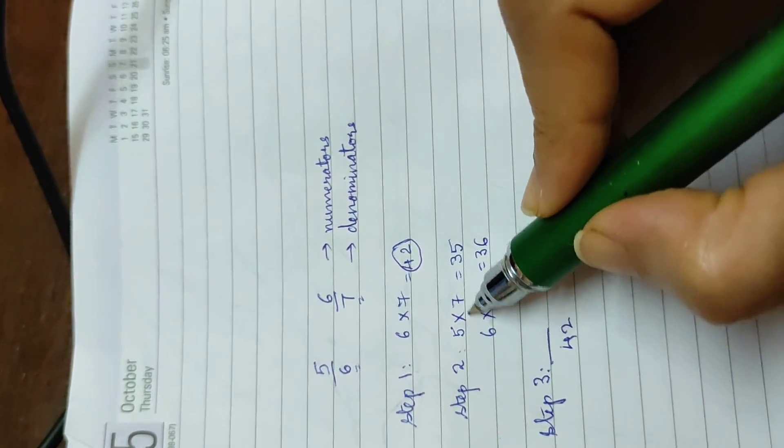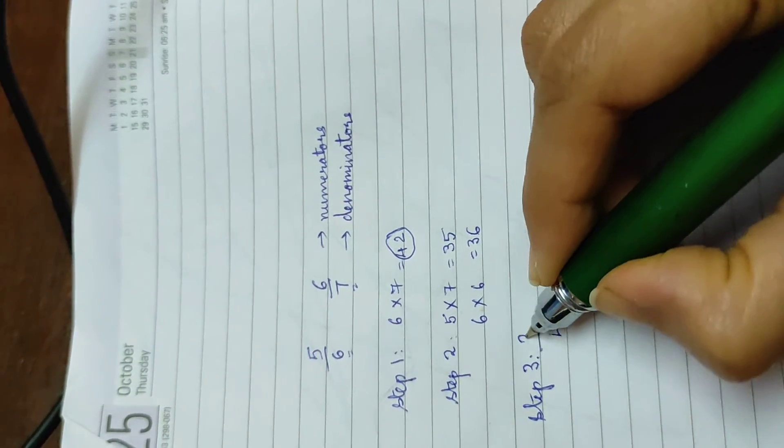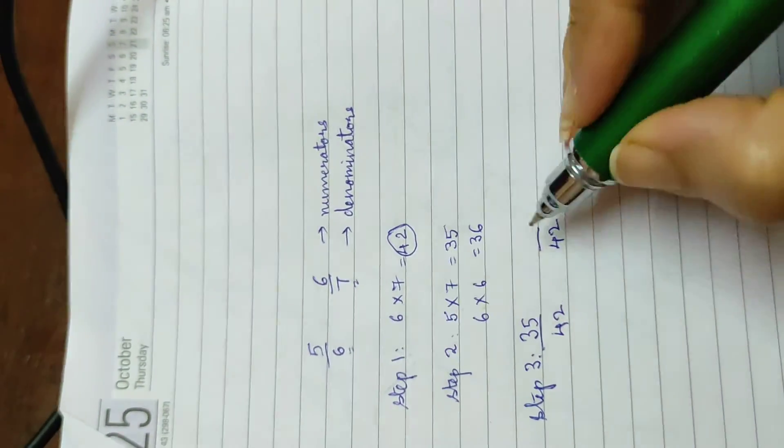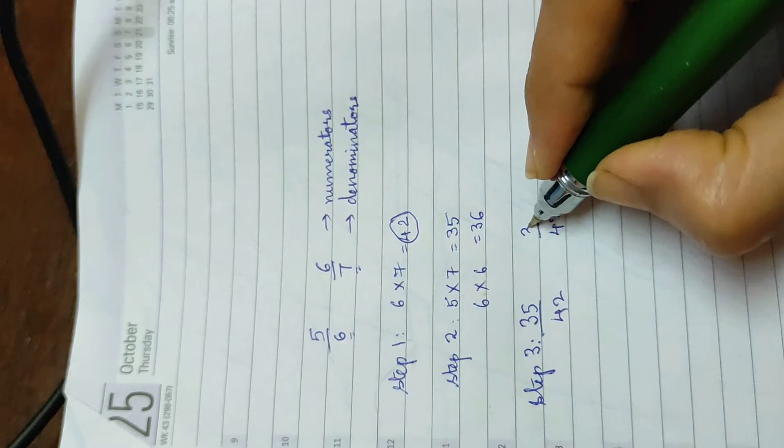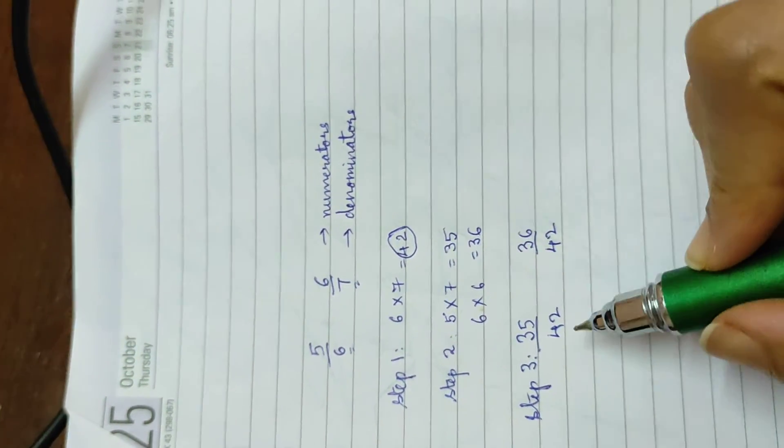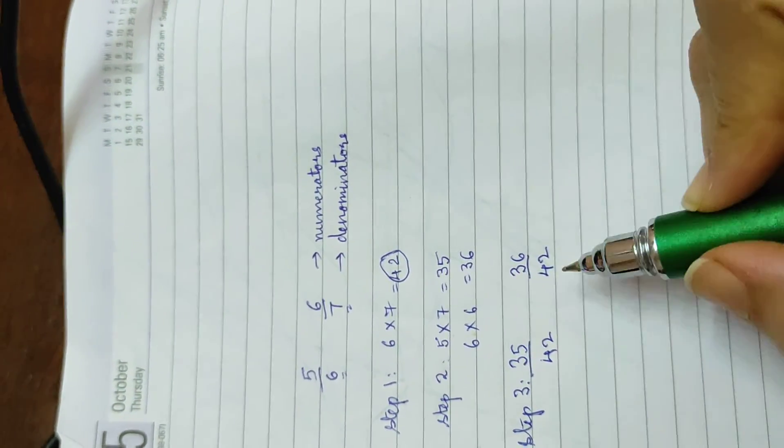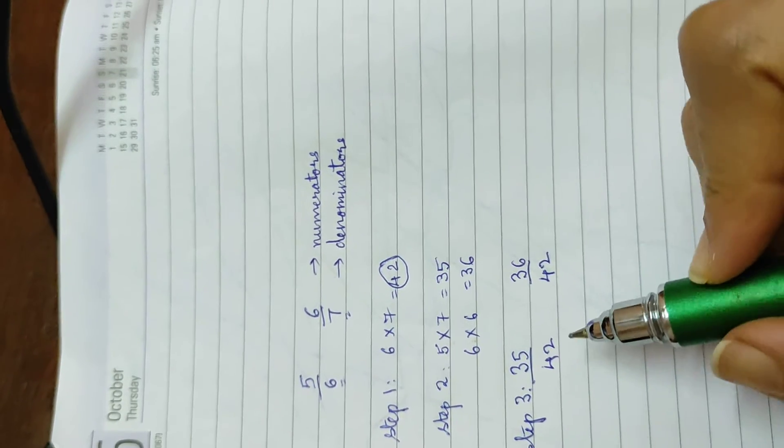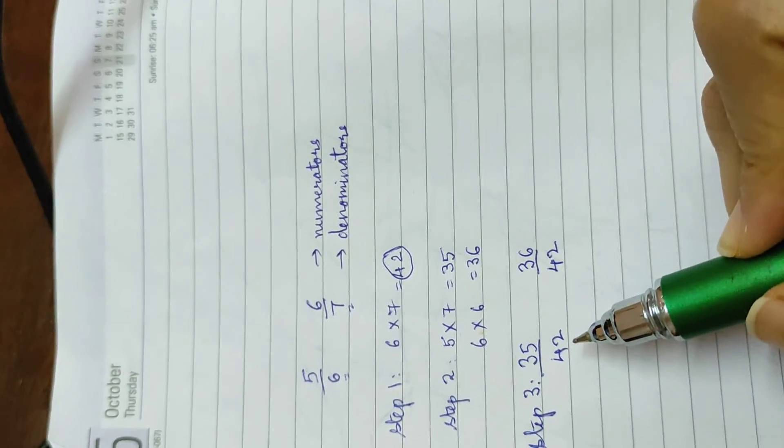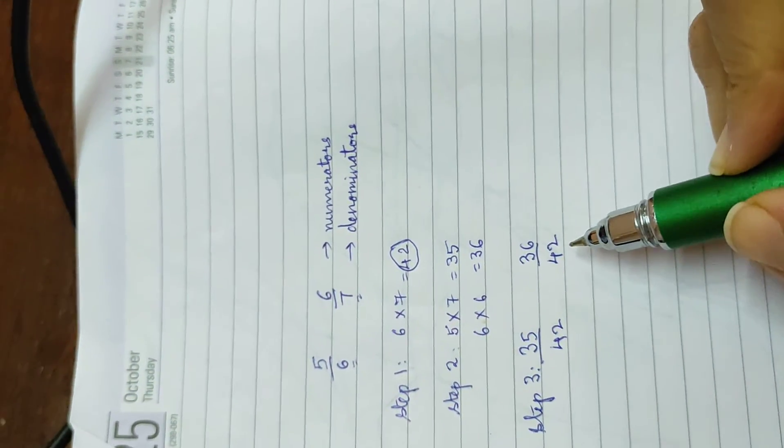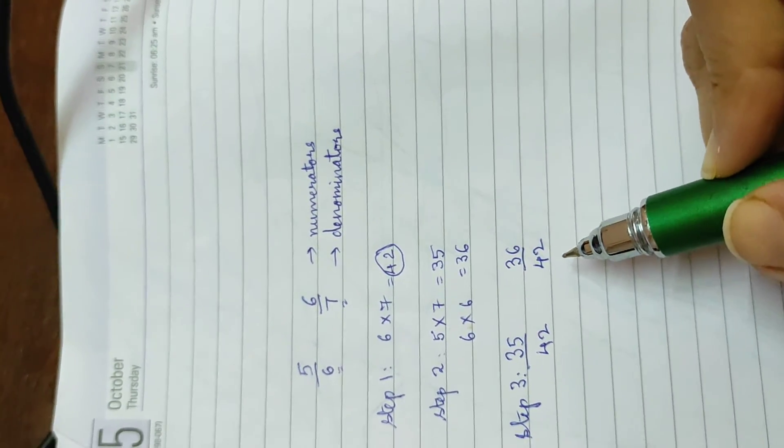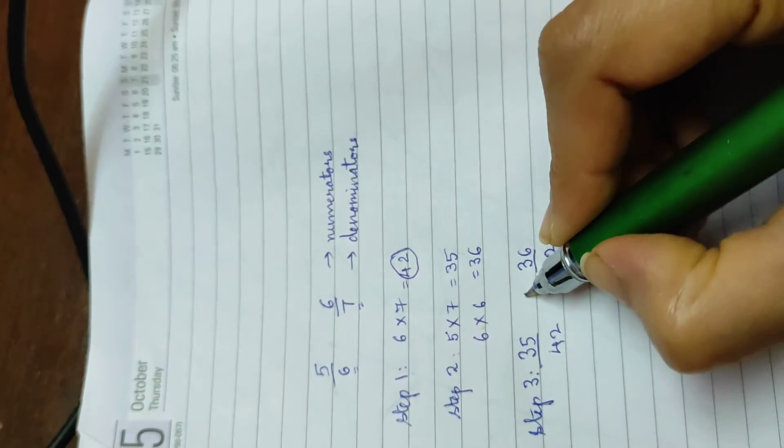So we had done 5 times 7 is 35 and we had done 6 times 6 is 36. So whichever object it is, it has been cut into 42 pieces. So I'm asking you, 35 by 42 is bigger or 36 by 42 is bigger? So now it's simpler for you to solve and you can tell me 36 by 42 is a bigger fraction.